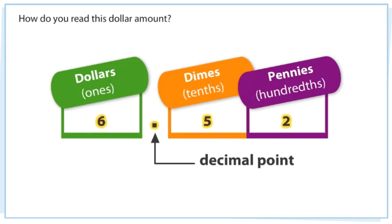How do you read this dollar amount? You read this amount as $6.52. You can read $6.52 in several ways.